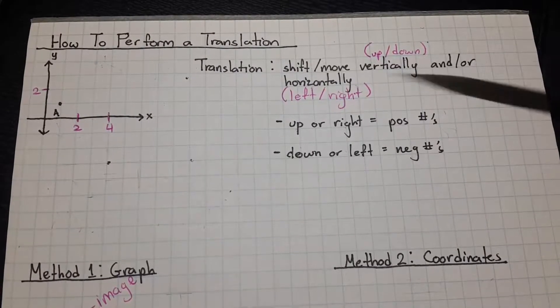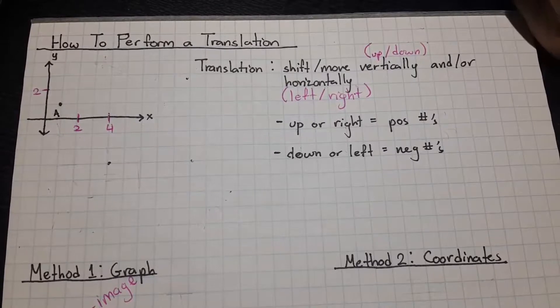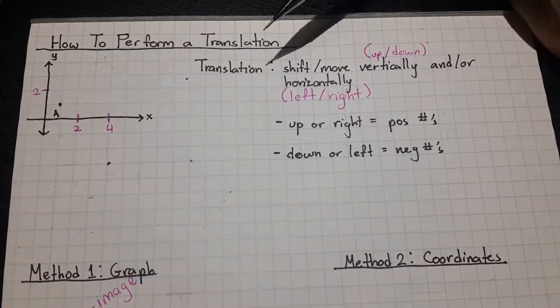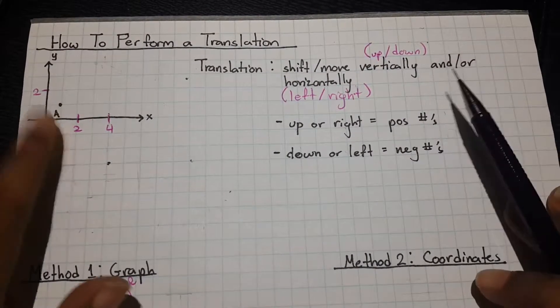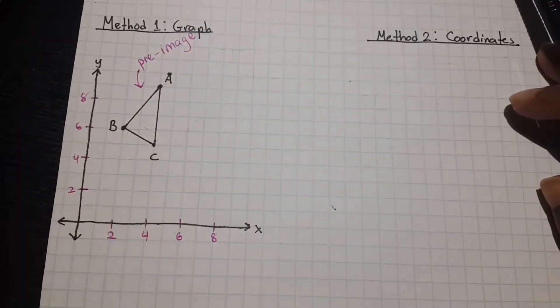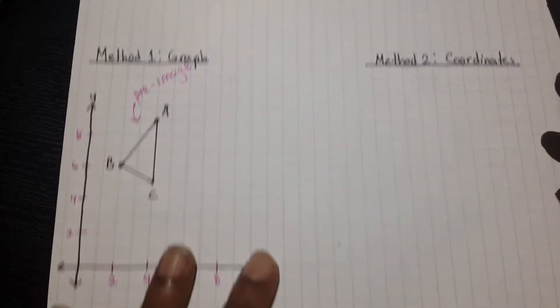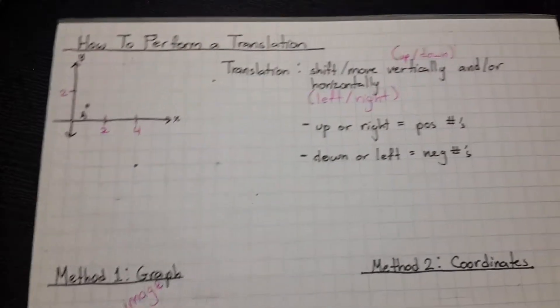Hey guys, so today we're going to go over how to perform a translation on the coordinate plane. We're going to start off with a simple example using just one point, and then we're going to move on to using a typical figure you would see on an exam or a quiz.